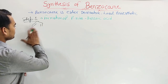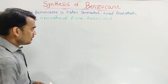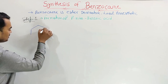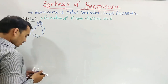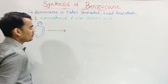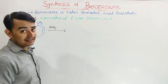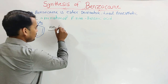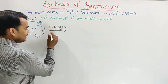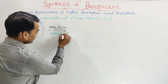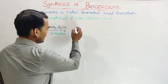Para nitro benzoic acid — this synthesis starts from toluene. This toluene undergoes nitration. Nitration is always carried out with HNO3, nitric acid. Nitric acid is not used alone — it requires the presence of sulfuric acid, H2SO4. This process is known as nitration, and by this process toluene will become para nitro toluene.